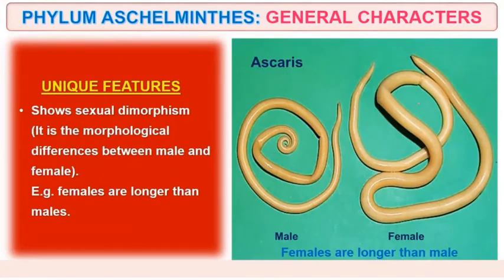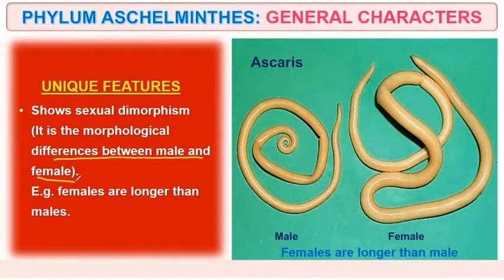They also show sexual dimorphism — that is, there is a morphological difference between males and females. Males are usually shorter than females, so females are longer than males in Aschelminthes, the roundworms.